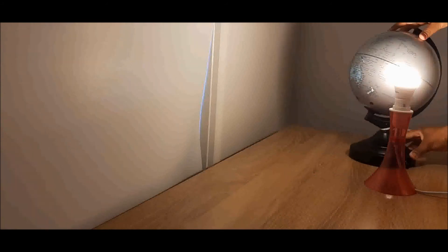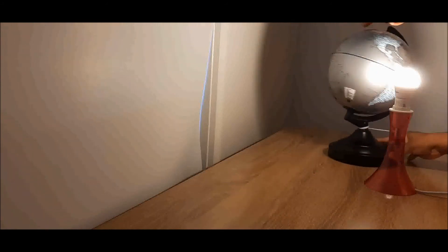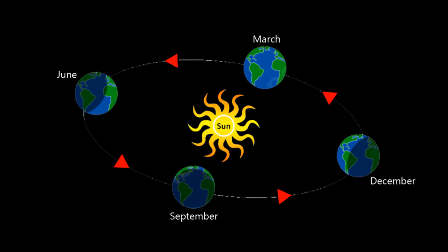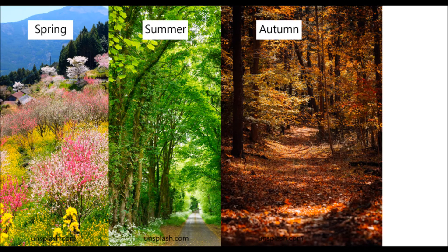As the tilted Earth travels around the Sun while rotating on its own axis, different parts of it slant or tilt towards the Sun. This affects the amount of light and heat that different parts of Earth receive, causing seasons to occur. We have four seasons: spring, summer, autumn, and winter.